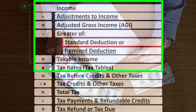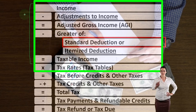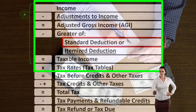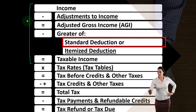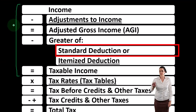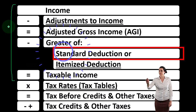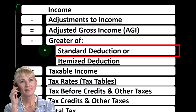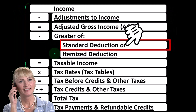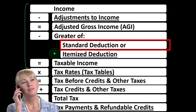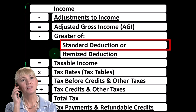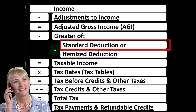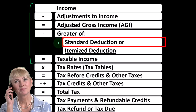We've got income minus the adjustments to income. The above-the-line deductions we saw in a prior presentation gets us to the Adjusted Gross Income, or AGI. And then we take the greater of the standard deduction — our focus now — or the itemized deductions. We'll talk about itemized deductions later. Now our focus is on the standard deduction.